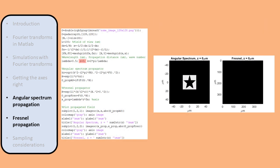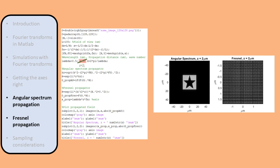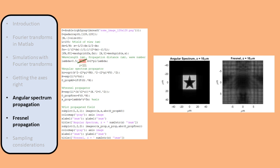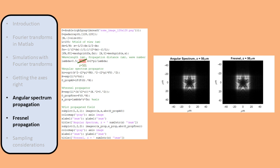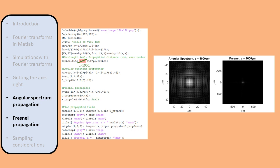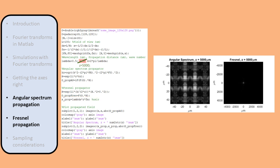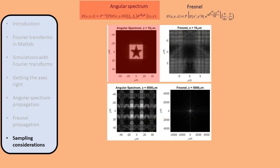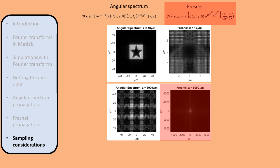We can now compare the two propagation methods. For small propagation distances, the angular spectrum method is accurate, whereas the Fresnel propagation method clearly does not give the right results. As the propagation distance increases, the two methods give similar results. Note that for the Fresnel propagation method, the field of view increases as the propagation distance increases. For very large propagation distances, the angular spectrum method starts to display numerical artifacts, whereas the Fresnel integral reduces to the Fraunhofer integral.